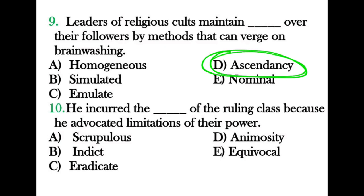Fill in the blank: 'He incurred the ___ of the ruling class because he advocated limitations of their power.' The options include unscrupulous, conscientious, indict, eradicate, animosity, equivocal, and categorical. The correct answer is 'animosity' — meaning enmity or hostility. He incurred the enmity of the ruling class because he advocated limiting their power.